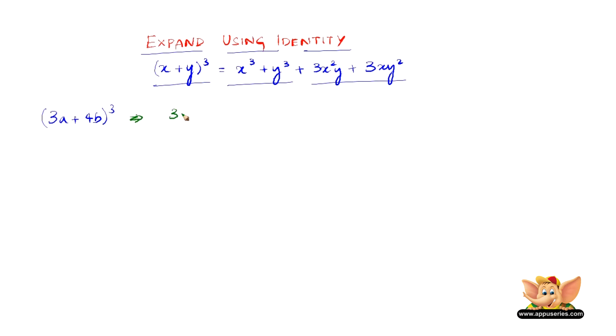So we can write this as 3a the whole cube plus 4b the whole cube plus 3 into 3a square into 4b plus 3 into 3a into 4b the whole square.